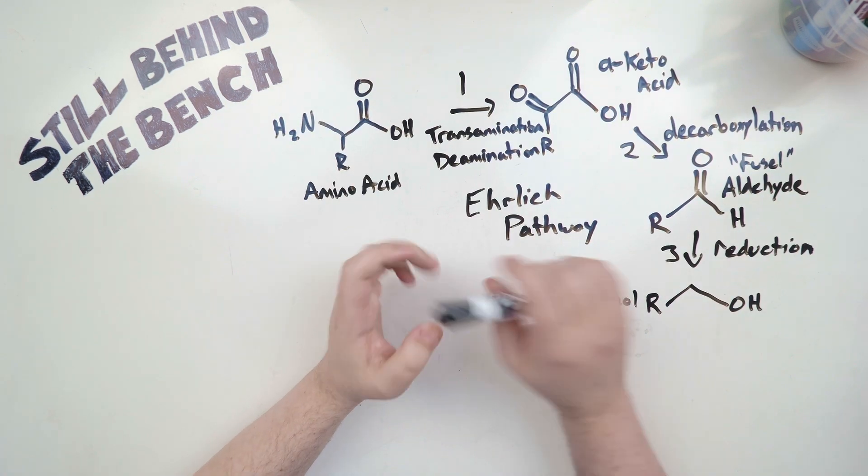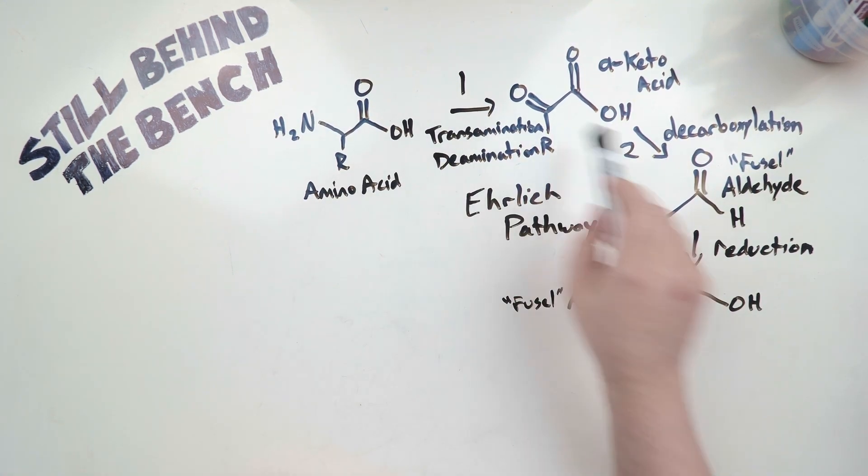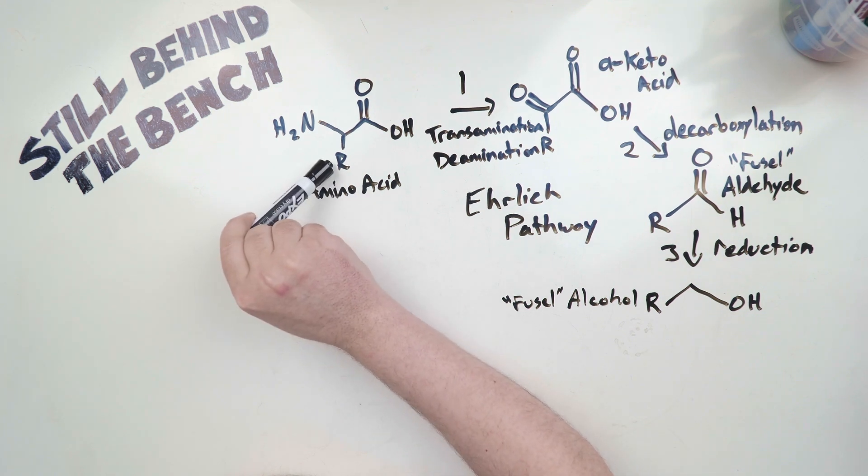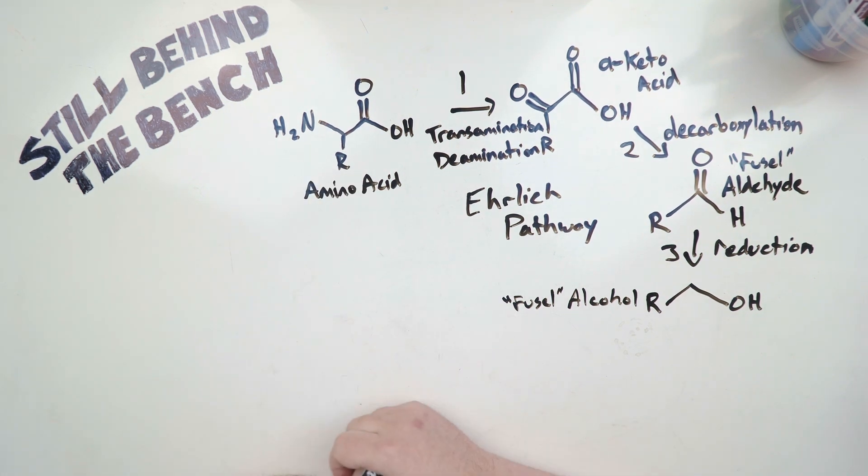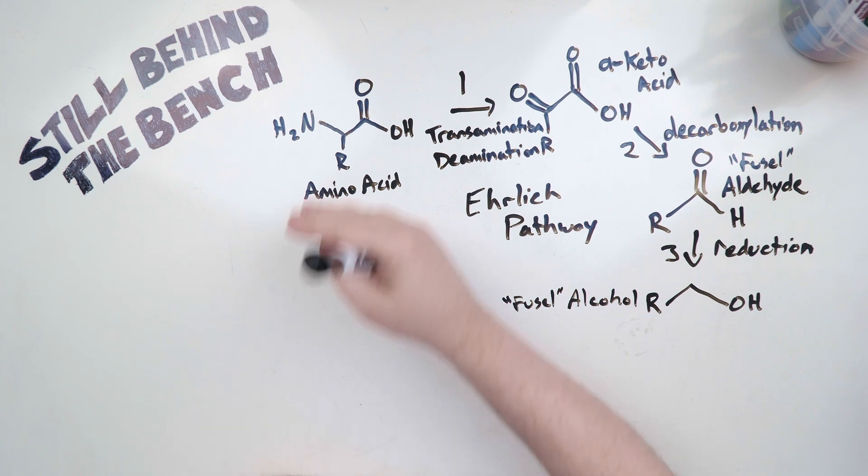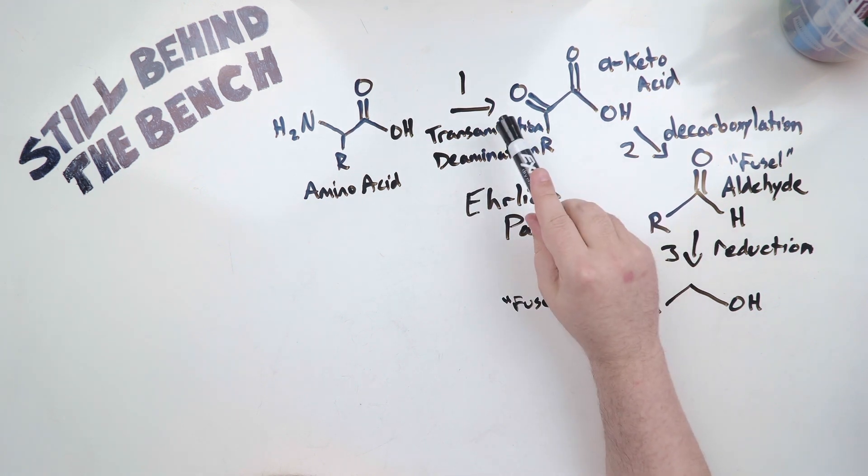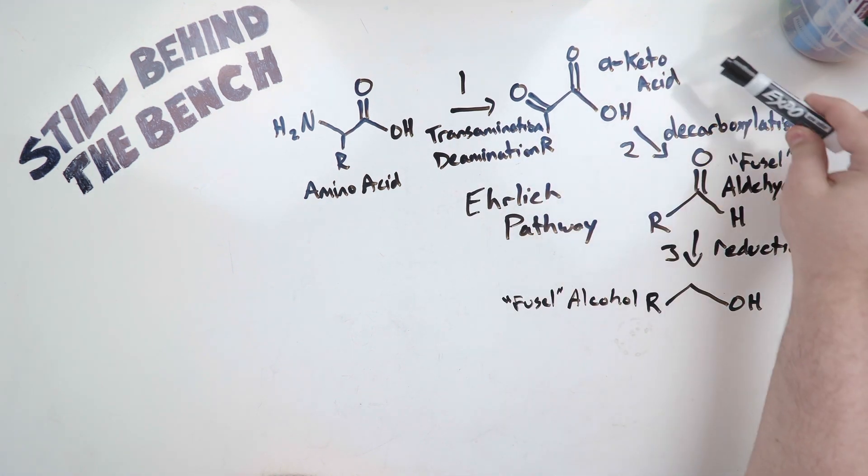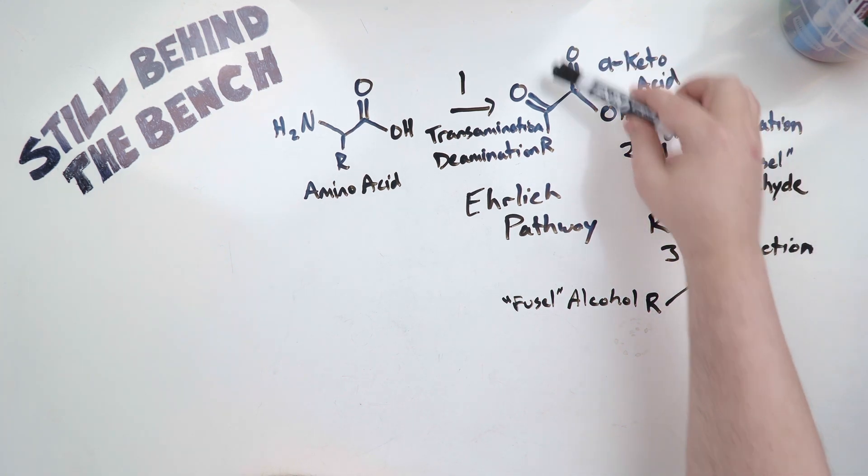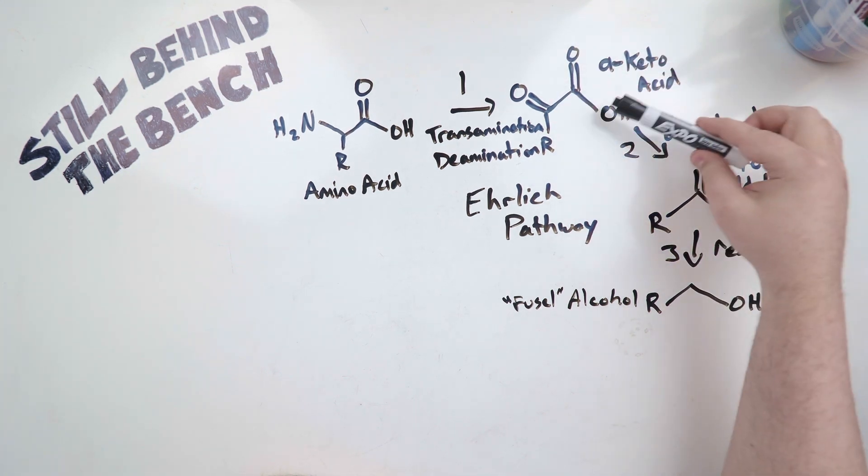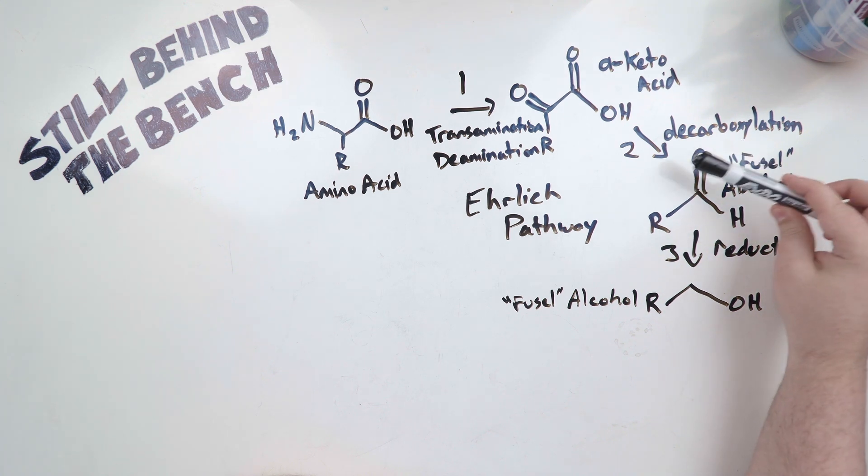Okay, so here is the Ehrlich pathway. There are three steps. In organic chemistry when you see the letter R that means anything else can be attached there. We have our amino acid, whichever one it is. It gets transaminated or deaminated into an alpha-keto acid. The next step is decarboxylation where this carboxylic group will be broken off and we end up with our first fusel which is called a fusel aldehyde.